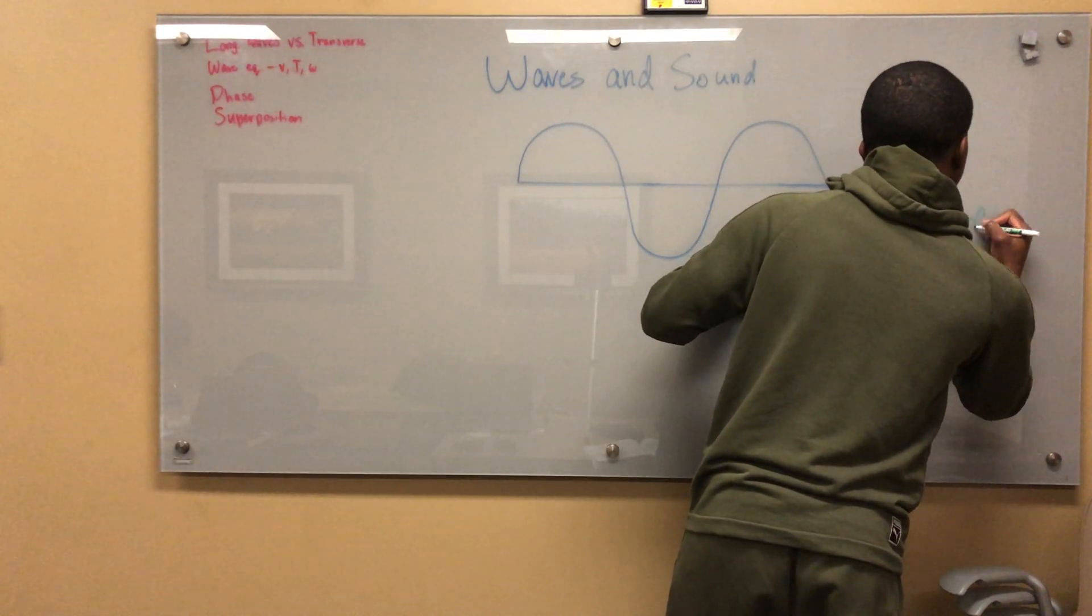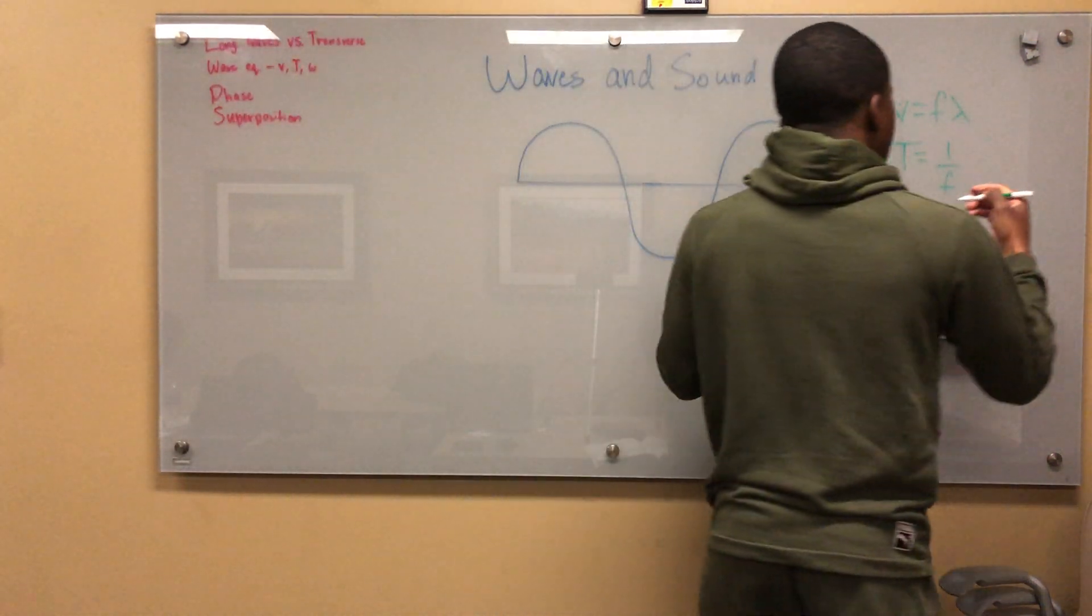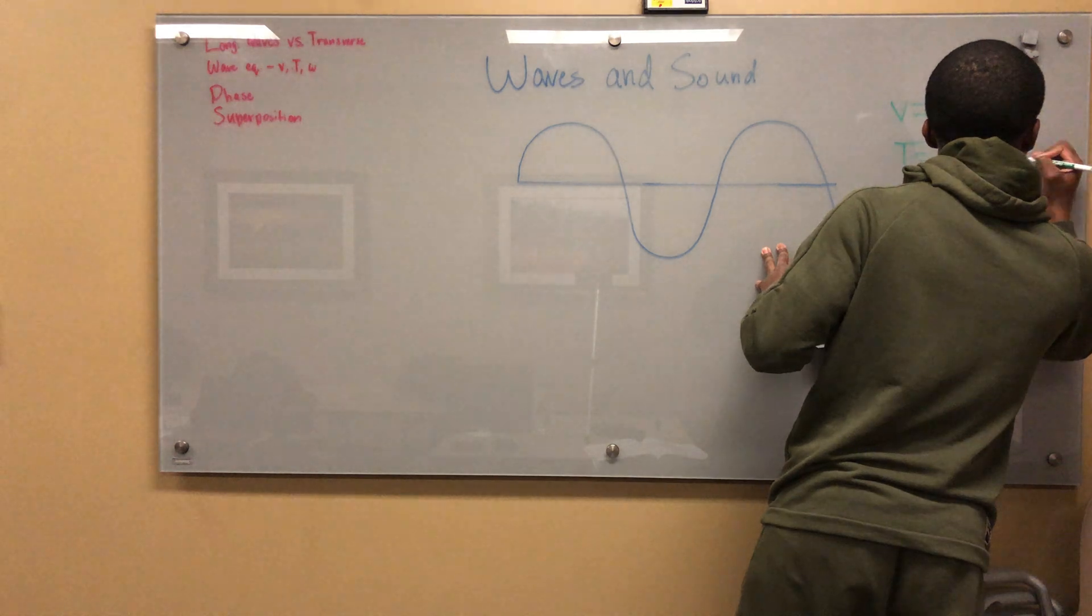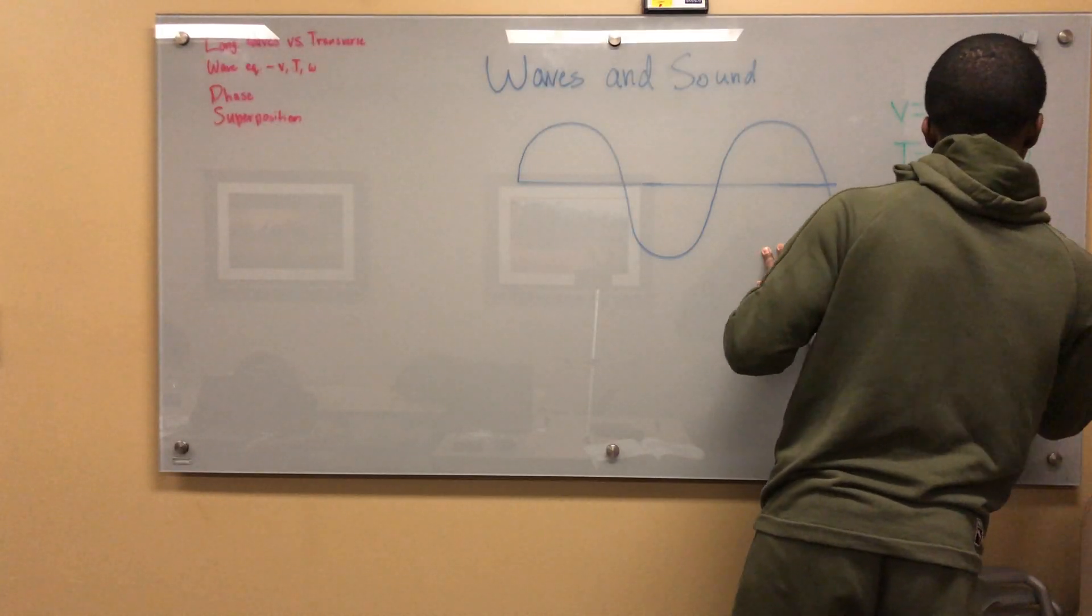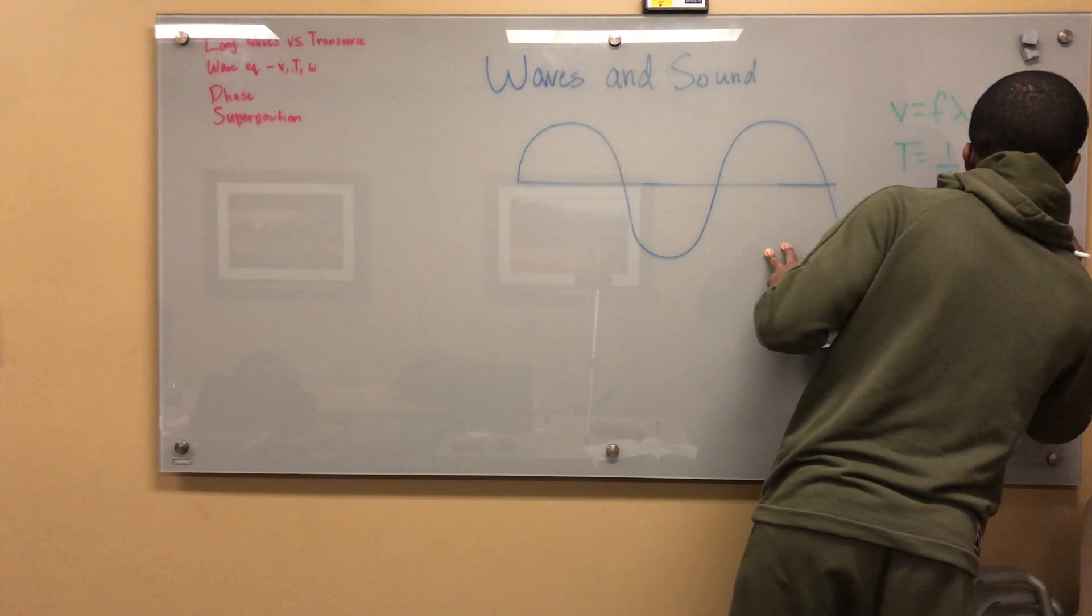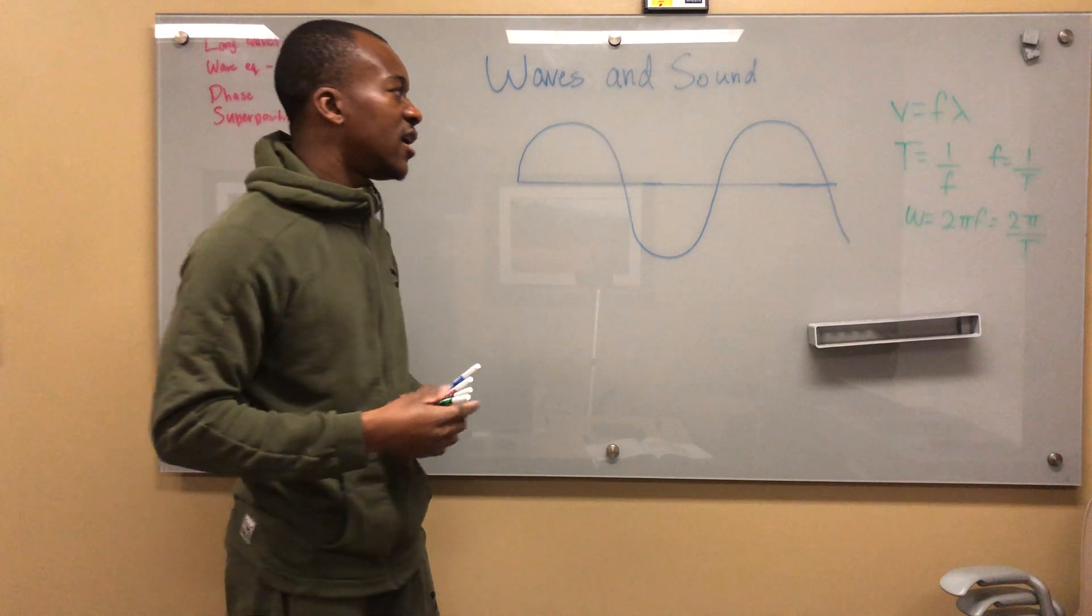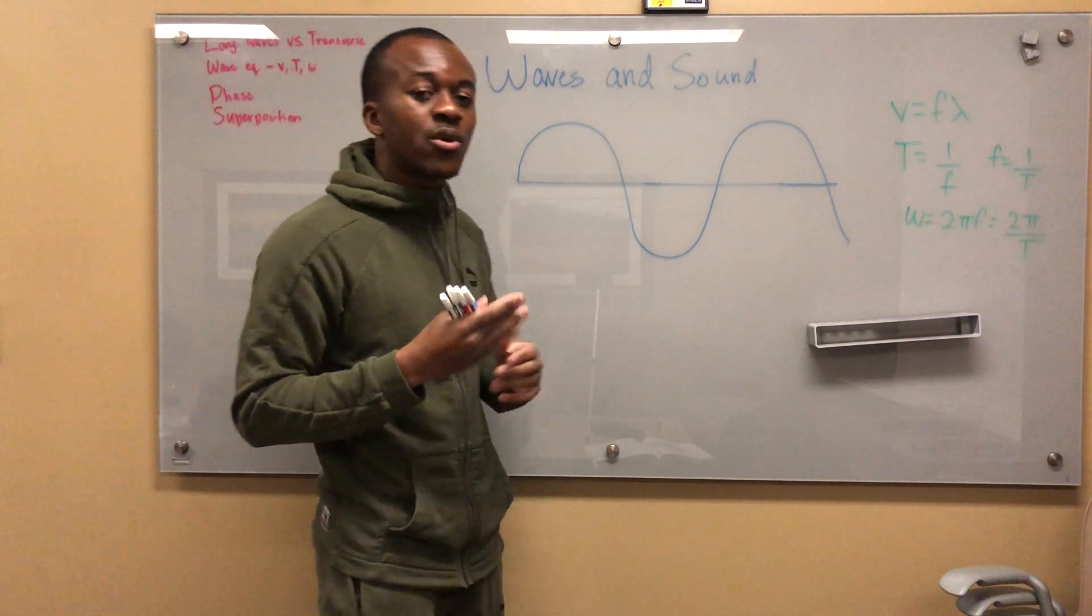Omega equals 2 pi f. This means that since f is also 1 over T, this can also be written as 2 pi over T. These are all formulas that are helpful to figure out what's going on with the wave.